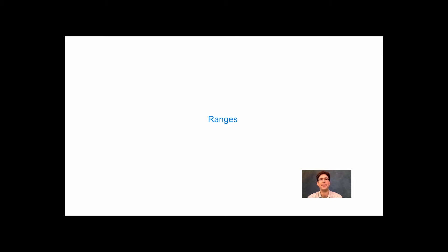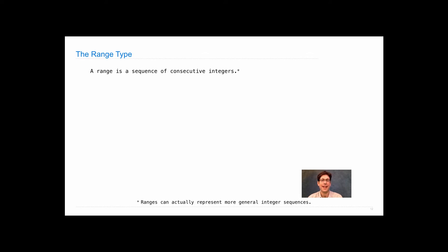Ranges are another sequence type. That means they're sequences, but they're not lists. Ranges are there to represent sequences of consecutive integers. They can represent all kinds of integer sequences, but we're just going to focus on the ones that have consecutive integers — so counting upwards.